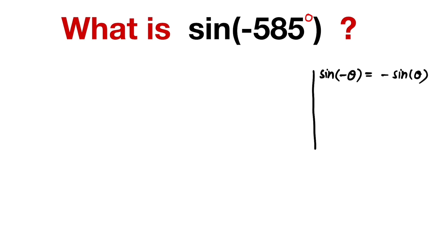From this, we have sine of minus this angle is the same as minus sine 585 degrees. Now we can write 585 as 2π plus 225, because 360 plus 225 equals 585.